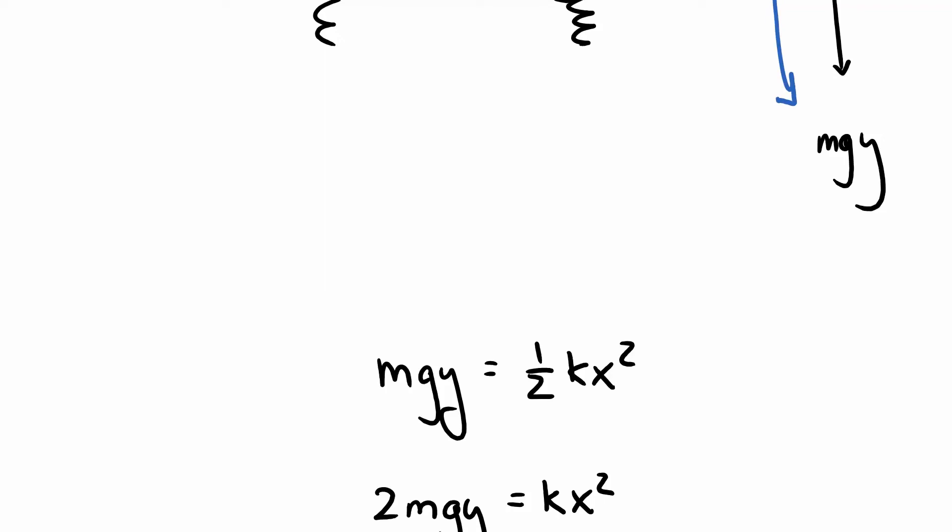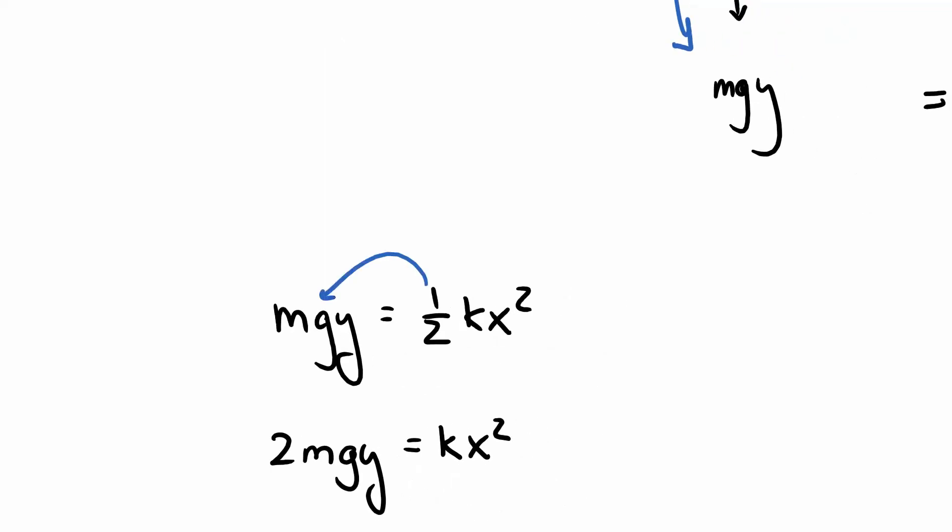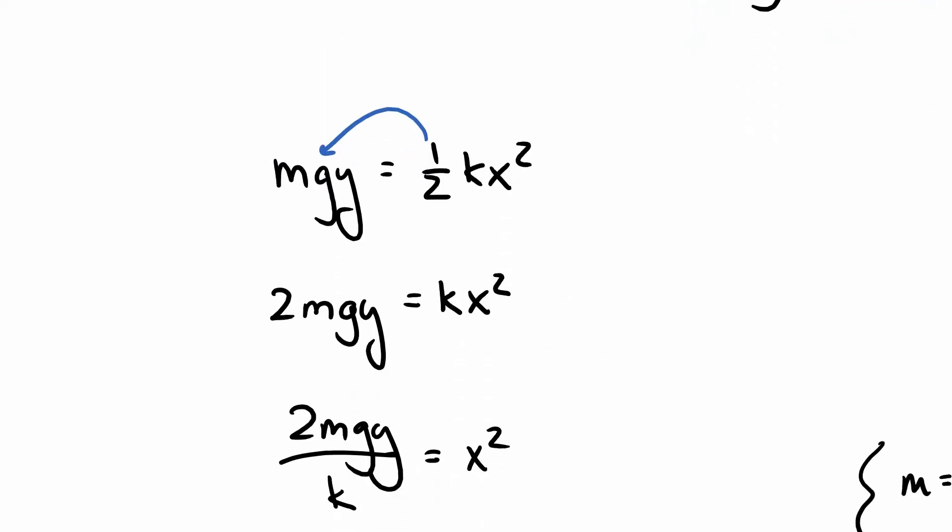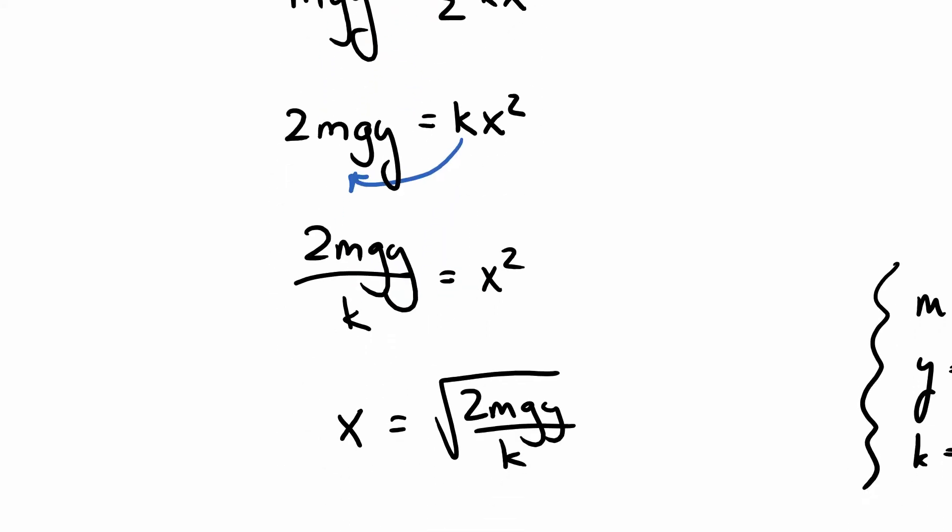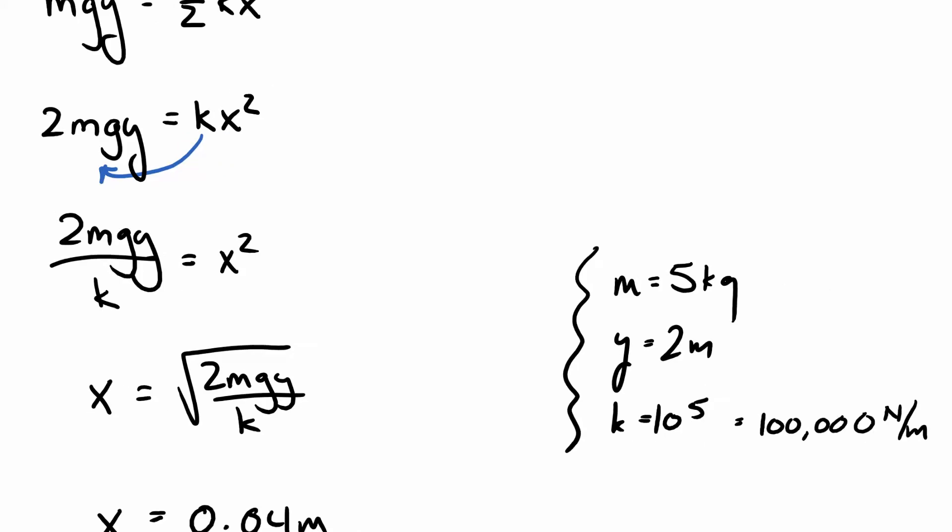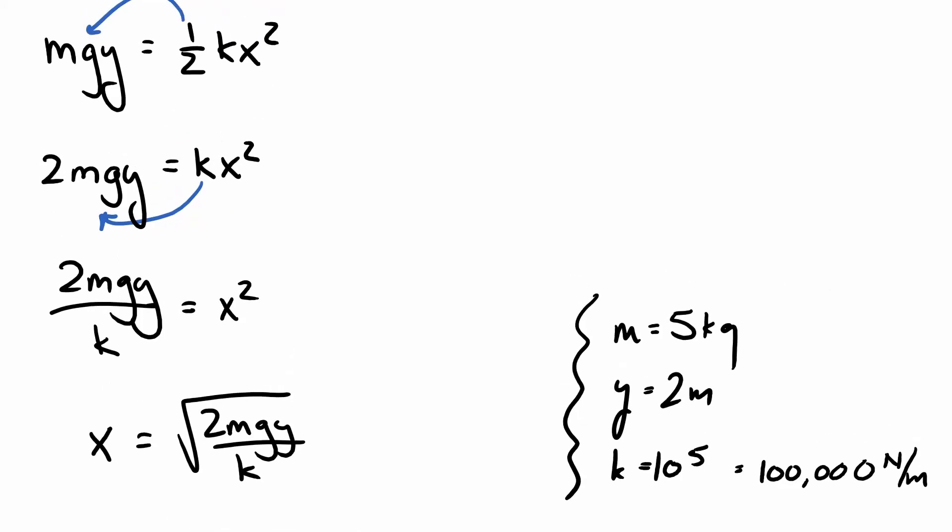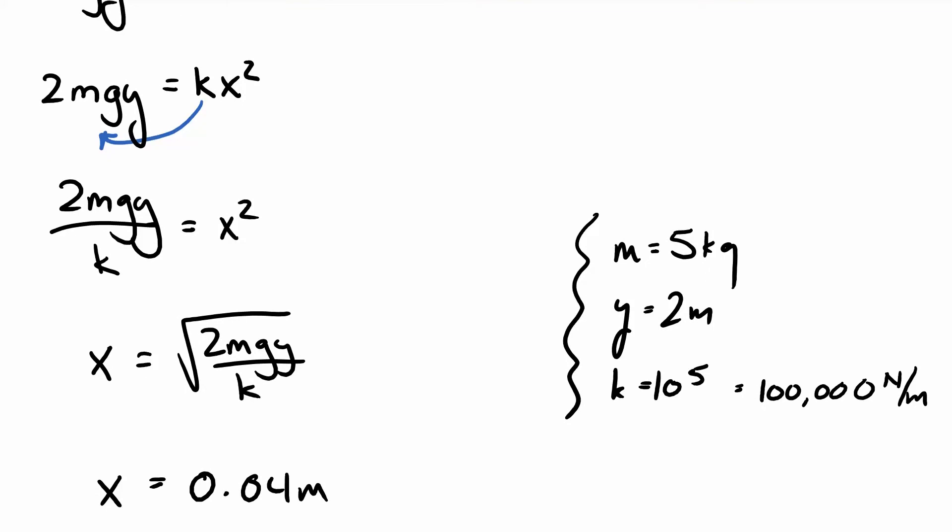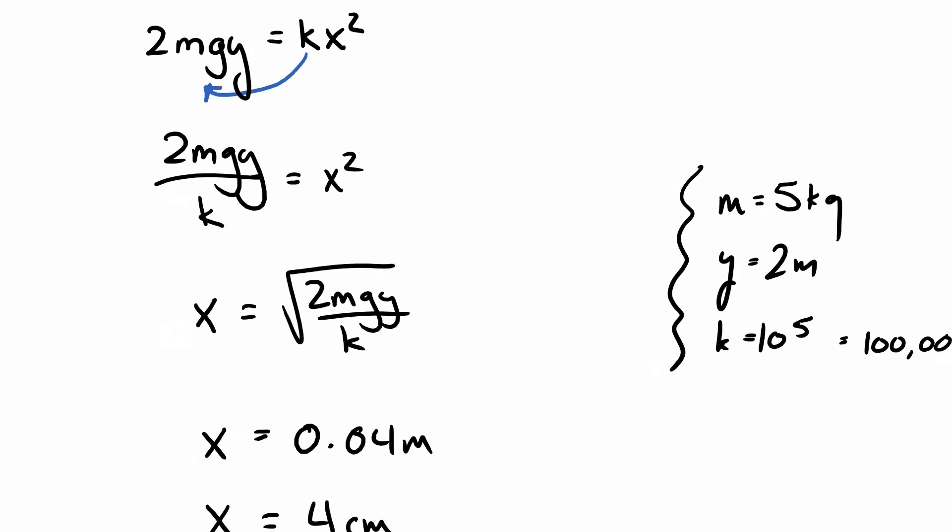M, G, Y equals one half K X squared. Move this two on over. Then let's see, you're going to divide by K. Then I guess another square root. Now, at this point, you may be forgetting numbers, so let's refresh ourselves. We know, don't want to spoil this. M is five kilograms. Y is two meters. K is 10 to the fifth newtons per meter or 100,000 newtons per meter. So I put all that in and I get 0.04 meters or four centimeters.